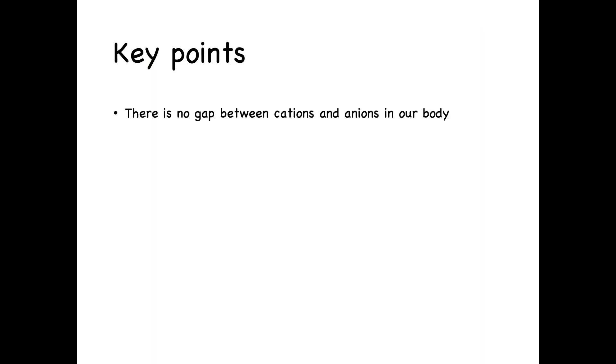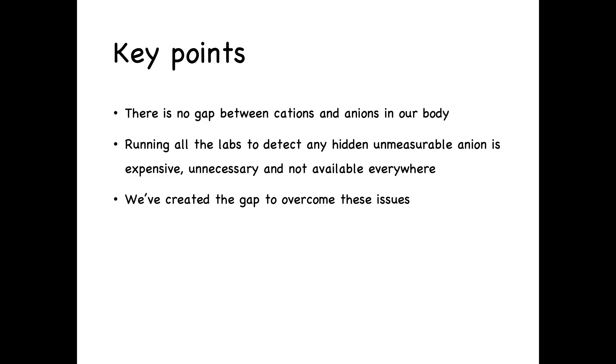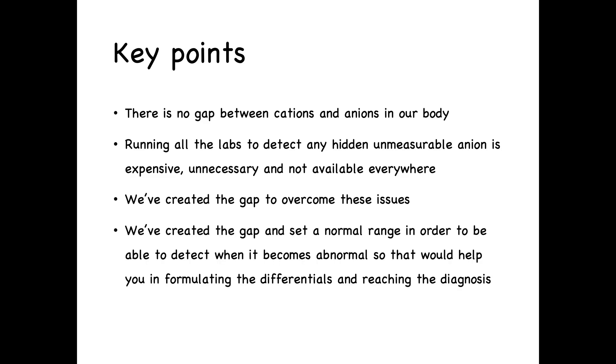So to summarize, there is no gap between cations and anions in our body. Running all the labs to detect any hidden unmeasurable anions or cations is expensive, unnecessary, and not available everywhere, especially when you talk about the old days. We've created this gap to overcome these issues. We've created this gap and set a normal range in order to be able to detect when it becomes abnormal. So that would help us formulating the differentials and reaching the diagnosis. And I have to add that albumin is the main anion in the anion gap.